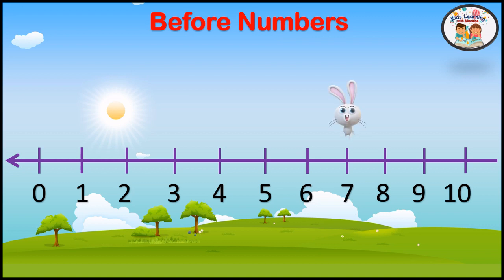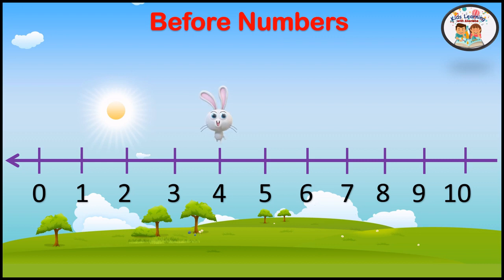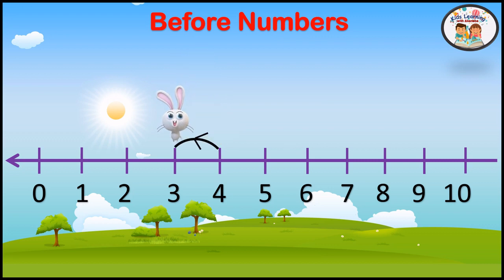So here, bunny is on number 7. So what comes before 7? Number 6. Now bunny is on number 4. So what comes before 4? Number 3.